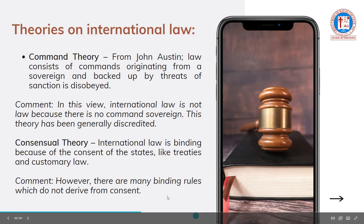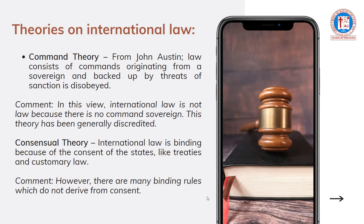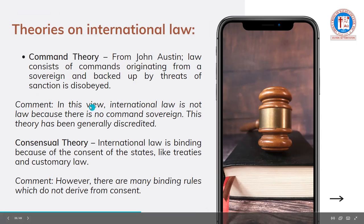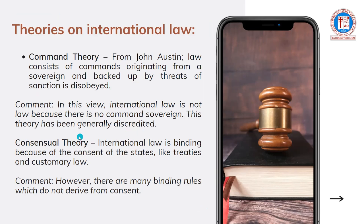Let's talk about theories in international law. We have the command theory from John Austin: law consists of commands originating from a sovereign and backed up by threats of sanction if disobeyed. In this view, international law is not law because there is no commanding institution which directs every state — telling Philippines to follow this and that, or telling China not to attack the fishermen of the Philippines. There is no commanding institution in international law that can reprimand the actions of every state.